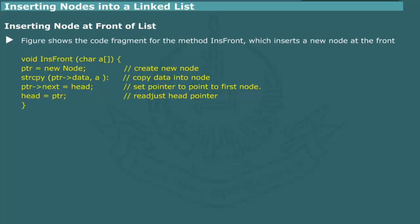The steps are as follows: first, a new node is created; then, data is copied into the node; then, the pointer is set to point to the first node; and finally, the head pointer is readjusted.